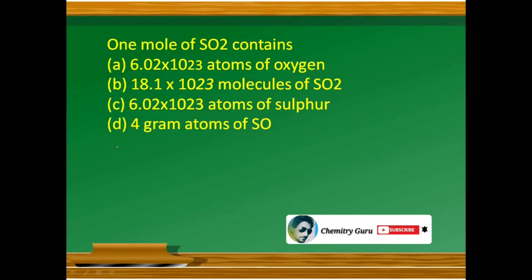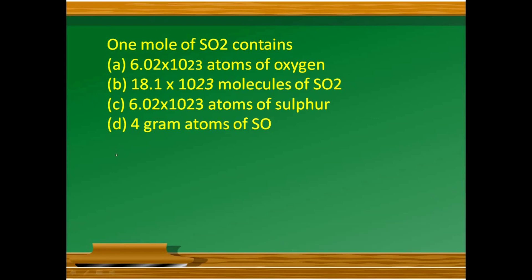One mole of SO₂ contains — first option: 6.02×10²³ atoms of oxygen; second option: 18.1×10²³ molecules of SO₂; third option: 6.02×10²³ atoms of sulfur; and the fourth option: 4 gram atoms of sulfur. To solve this MCQ, we first look at one molecule of SO₂.